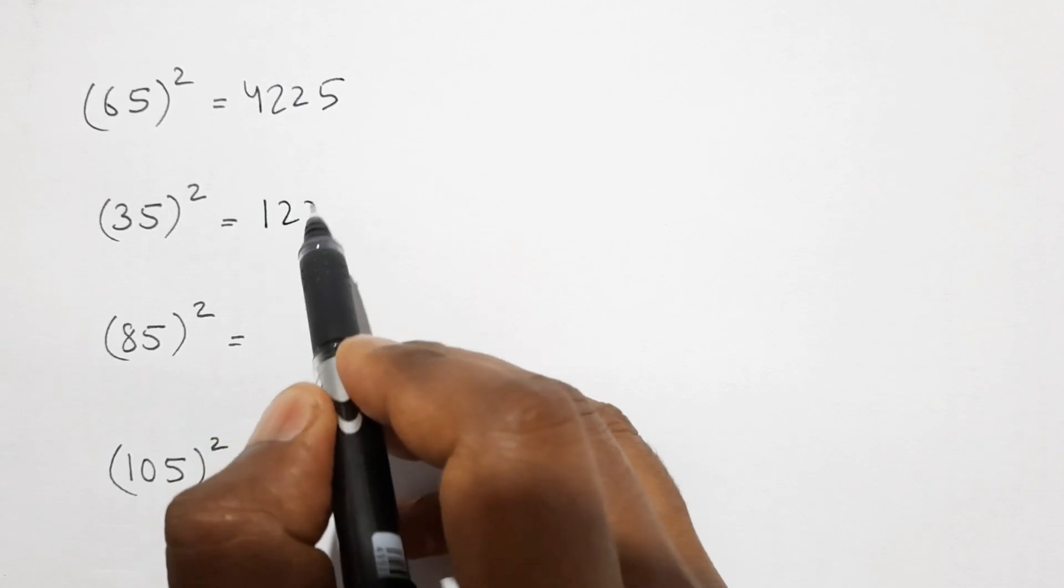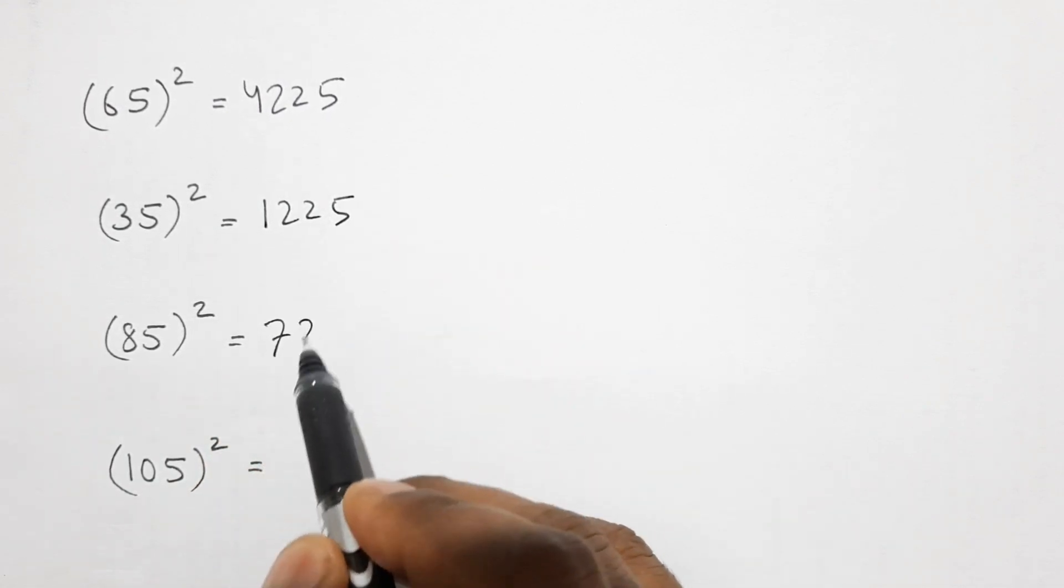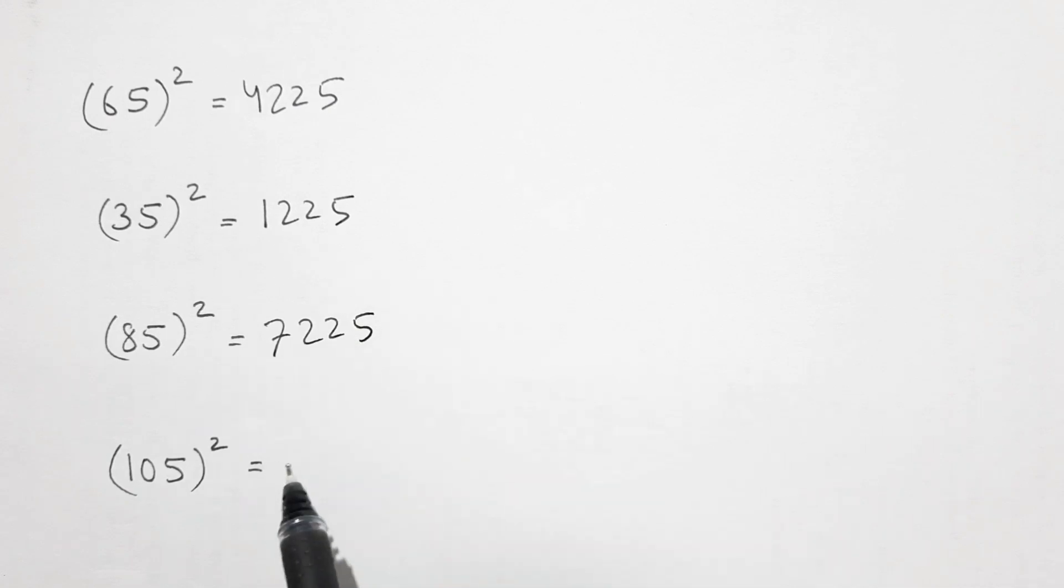The square of this number is this one. Square of 85 is 7225 and square of 105 is 11025. Here you see that I calculated the square of 4 numbers in just a few seconds, actually even less than a second.